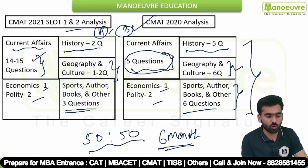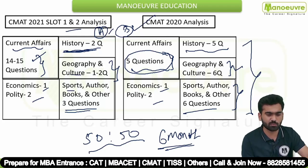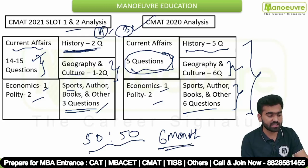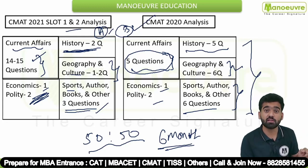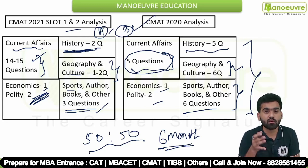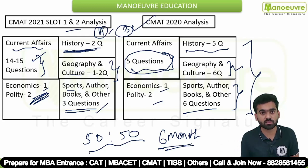For GK or the static part, you have to go through all these topics: history, geography and cultures, sports, authors and books, and all related things — prepare in detail. Economics and polity can also have many questions. In 2021 there were one or two questions, but in 2022 there may be 4 or 5 questions. So don't miss any question — prepare thoroughly.